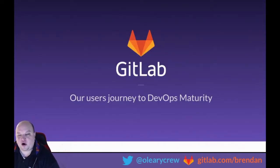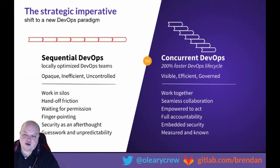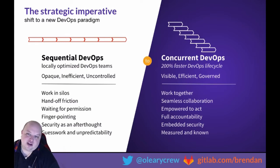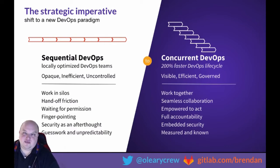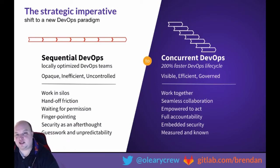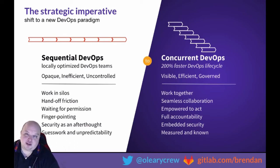Let's talk about our users' journey to DevOps maturity. GitLab sees concurrent DevOps as the answer for what has traditionally taken a very long time with a very sequential method of getting code into production. We think that one single application for the entire lifecycle will allow people to work together seamlessly, provide one place for accountability, one place for testing and results — and that's where Verify comes in. We want to help a customer no matter where they are along the journey, whether they're just getting started with CI or have very mature CI processes, to understand how GitLab can help them mature and move further along the DevOps maturity lifecycle.